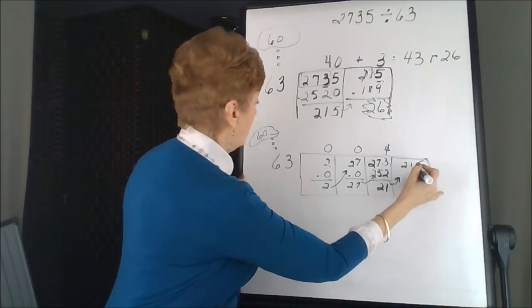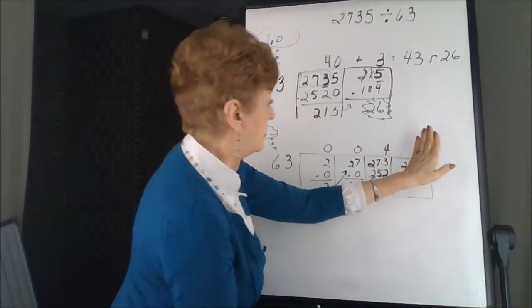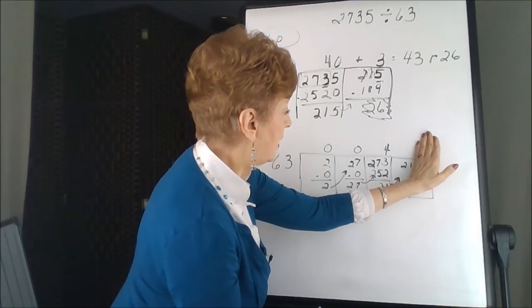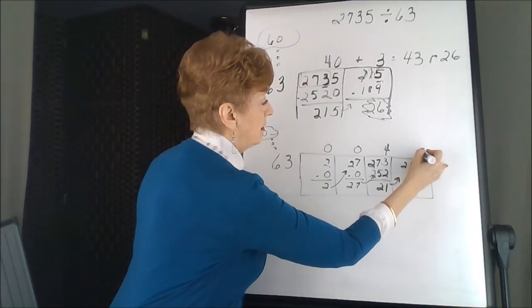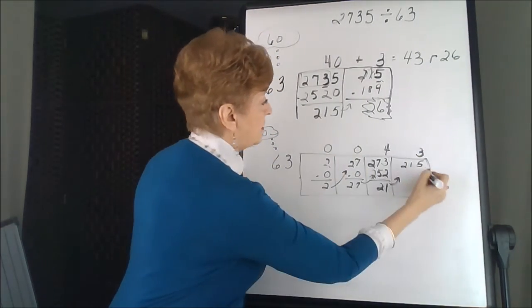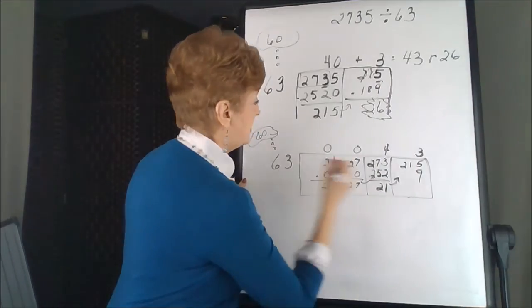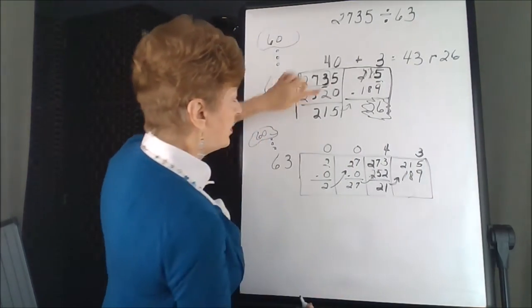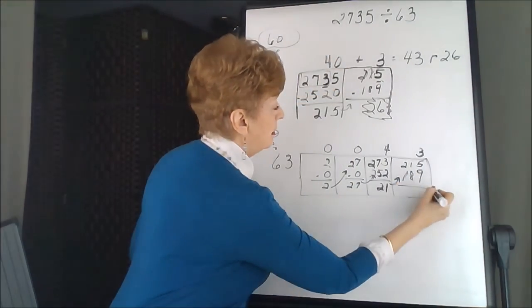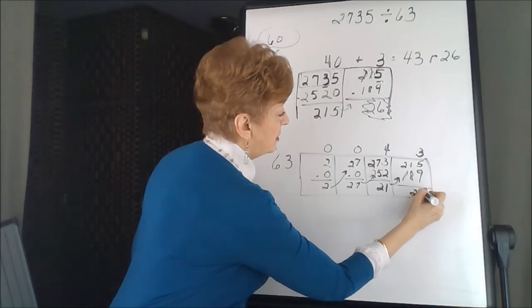When we went 6 goes into 2, no, 21, 3 times. 3 times 3 is 9. 3 times 6 is 18. Do you see how the numbers are the same? And our subtraction gives us 26.